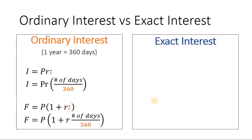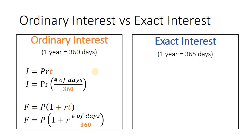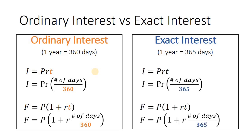This affects the formula for simple interest. For example, I is equal to PRT, where I is the simple interest, P is the principal amount, R is the rate, and T is time. For the time, notice that this is written in fraction form, and we have to express the days given in terms of year. To do that, we divide the days by 360 days. For exact interest, one year is equal to 365 days. Thus, for the formulas for simple interest and final amount, time T is written such that the divisor for the number of days is an exact 365 days.